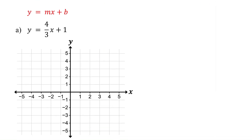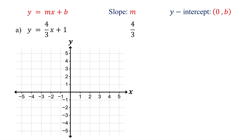For equations in slope-intercept form, the first step is to identify the slope and the y-intercept. The slope is the coefficient of x. The y-intercept is the point (0, b). So in this example, the slope is 4/3, and the y-intercept is (0, 1).